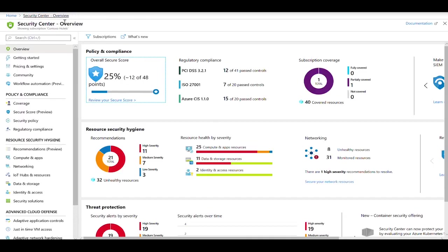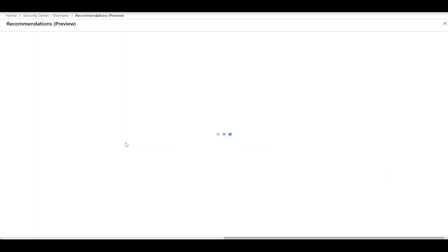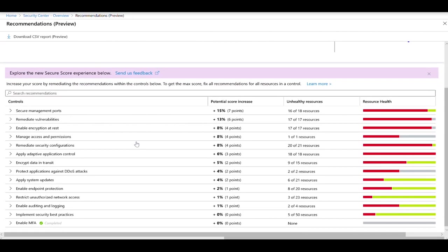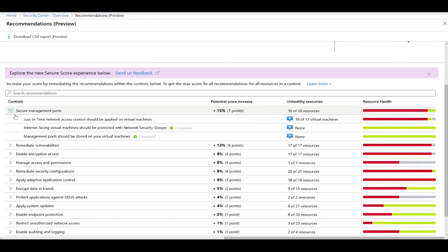As far as remediating the recommendations, what you're going to do is, you're going to go to the Security Hygiene and click on Recommendations, and you will see that the new Secure Score model is now organized in different Security Controls. Make sure that you prioritize the top-down list, which means that the first one in the list is the one that has the most impact in your Secure Score, in this case 15%.